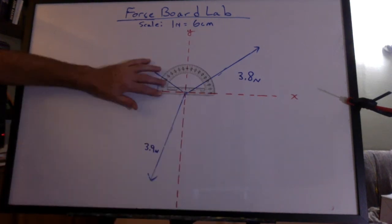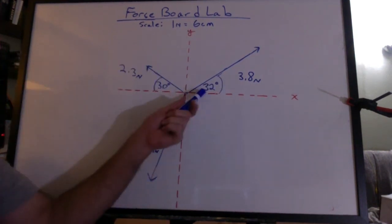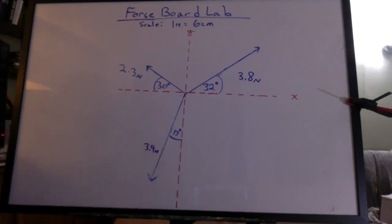Now we can measure the angles from the x and y-axis using the compass. We're not using north, south, east, and west. We're not using compass bearings. X and y-axis. I got 32, 30, and 17 degrees.